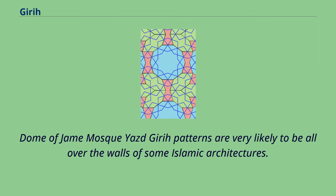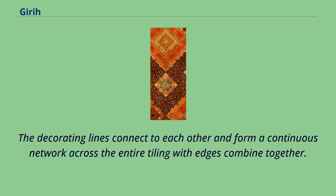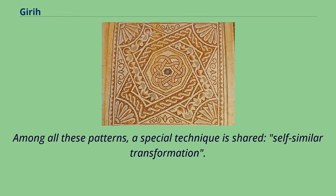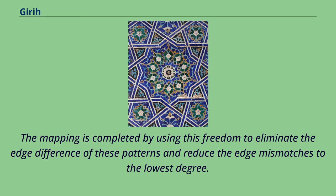Girih patterns are very likely to be found all over the walls of some Islamic architectures. The decorating lines connect to each other and form a continuous network across the entire tiling. Girih patterns vary greatly on the surface, with different geometric shapes including decagons, hexagons, bow ties, and rhombuses. Among all these patterns, a special technique is shared: self-similar transformation, completed by eliminating edge differences between patterns and reducing edge mismatches to the lowest degree.